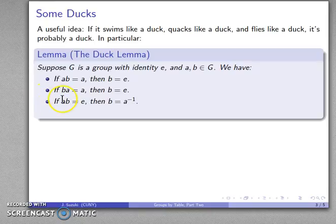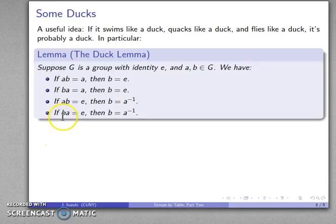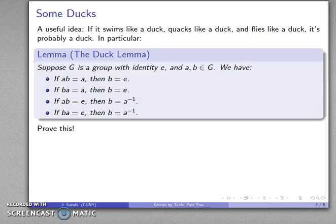And one more. If A times B is E, then B has to be A inverse. If B looks like the inverse, it actually is the inverse. And again, because commutativity isn't guaranteed, if I left multiply by B and get the identity, then B has to be the inverse again. These are things you should be able to prove relatively easily.